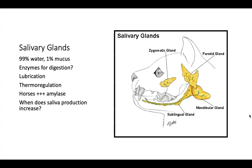Looking at salivary glands: these glands are not directly in the mouth but empty into it. Salivary composition is 99% water and 1% mucus. Some animals have amylase in their saliva for digestion — horses and humans do, but dogs, cats, and cows largely do not. Horses actually start both mechanical and chemical digestion in their mouth. The goal of salivary glands is to produce lubrication for food.